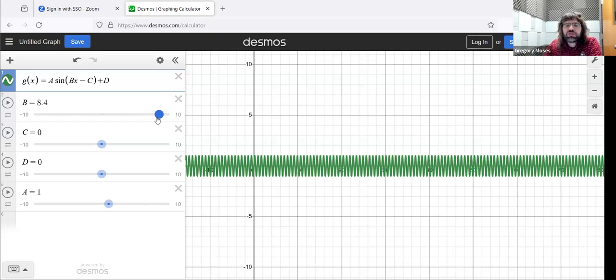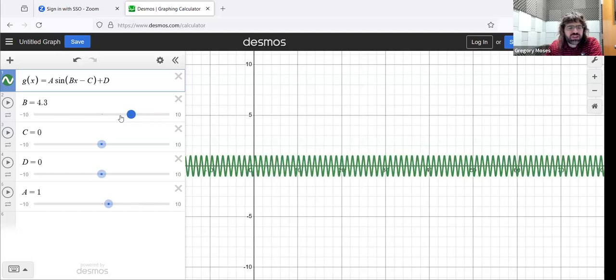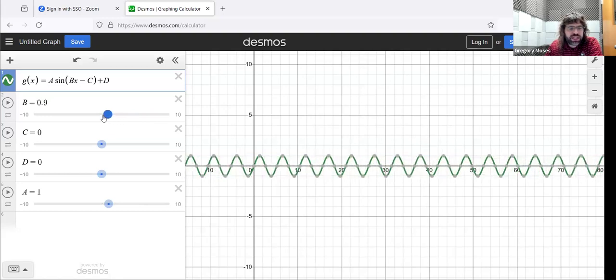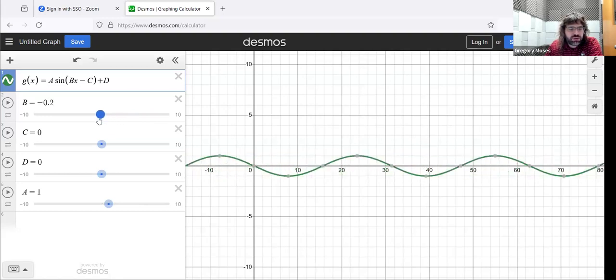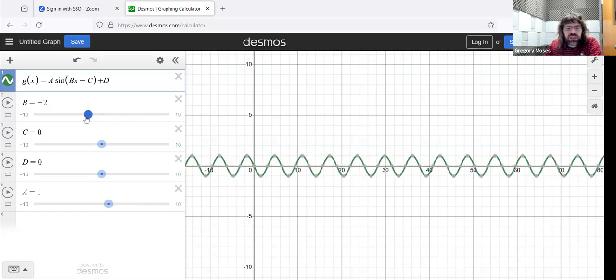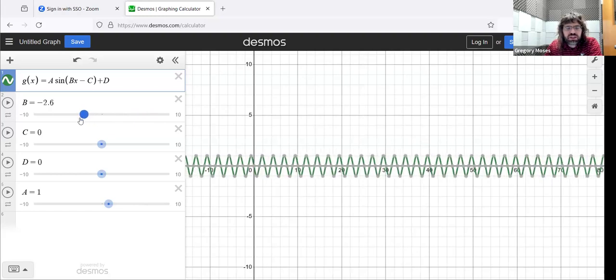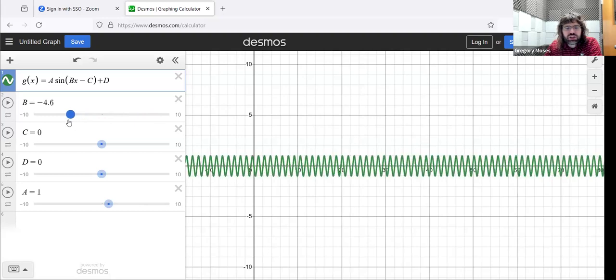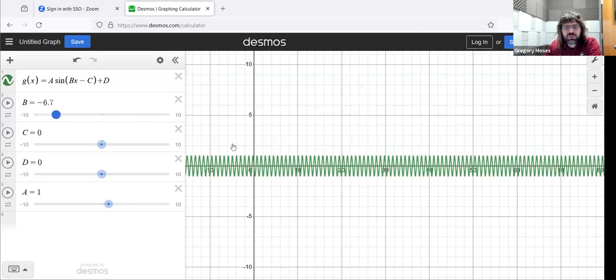And although in most sinusoidal functions B is going to be positive, we can look at negative B values, and we see the same thing. B values that are close to zero give you large periods. As B increases in the negative direction, the periods get smaller and smaller.